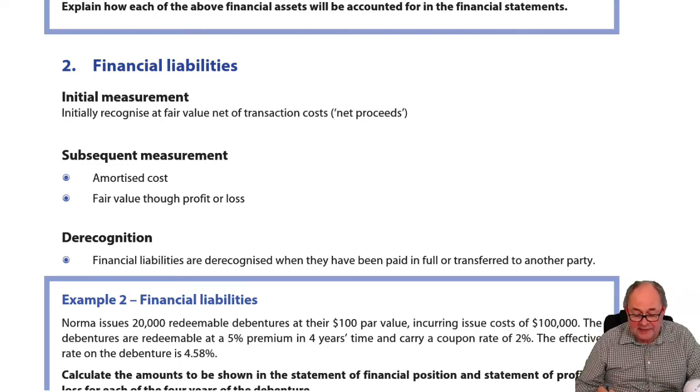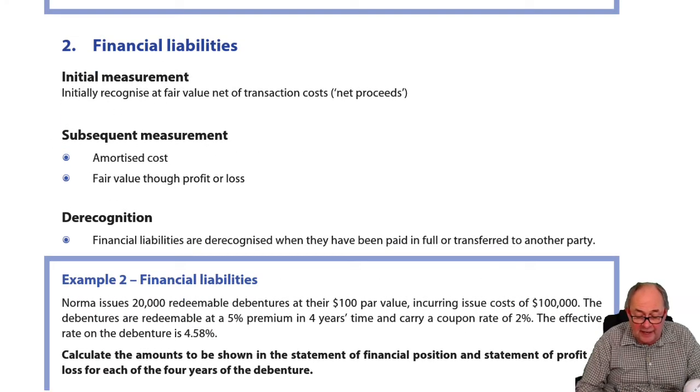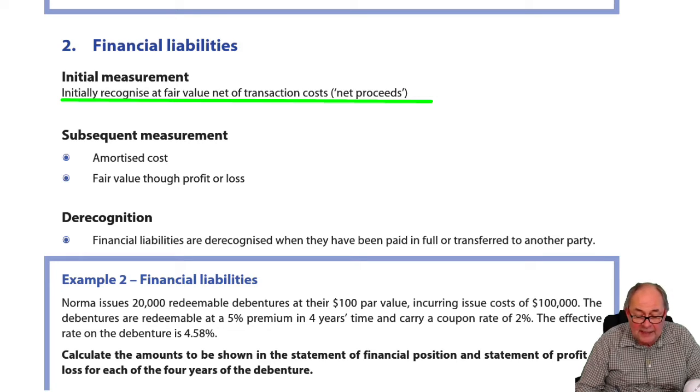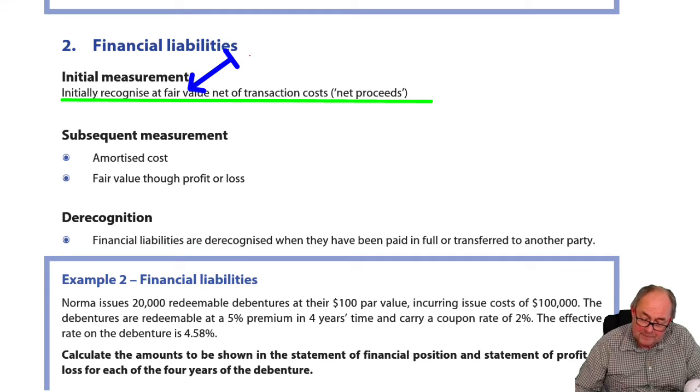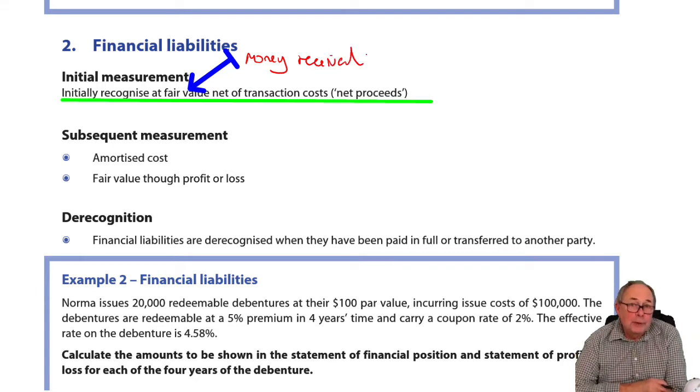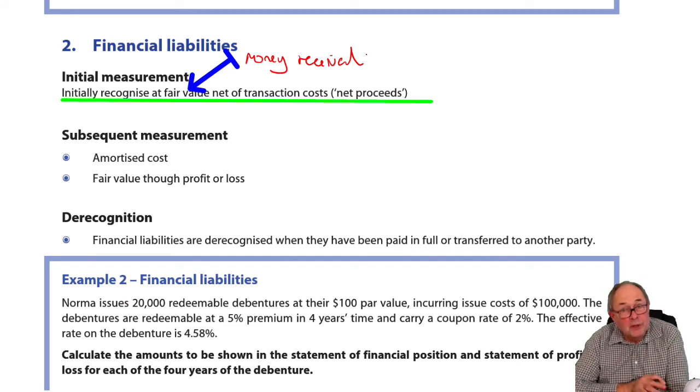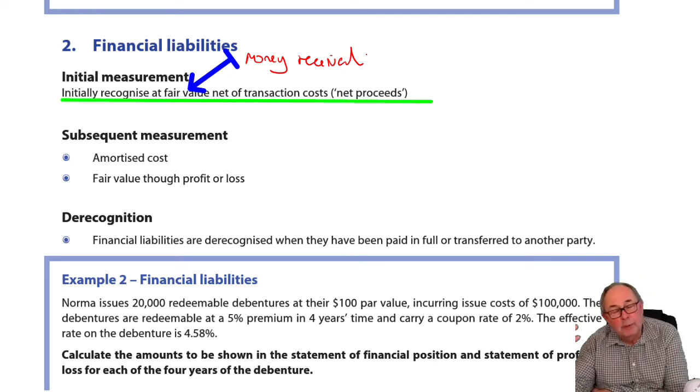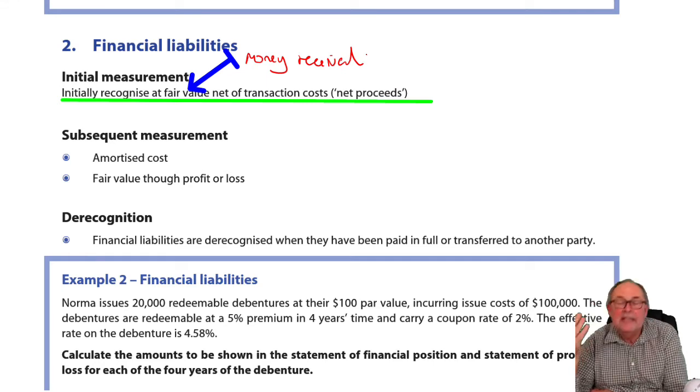Initially, on the day when you first recognize a financial liability, recognize at fair value. Fair value, of course, would tend to be the money that's been received or the money that's borrowed. The only exception is about convertible loans. We'll talk about those in a different lecture, but generally it's the money received. It may be that you've had to pay transaction costs. They will effectively reduce the amount of money that you're actually receiving. So that's why it says net proceeds.